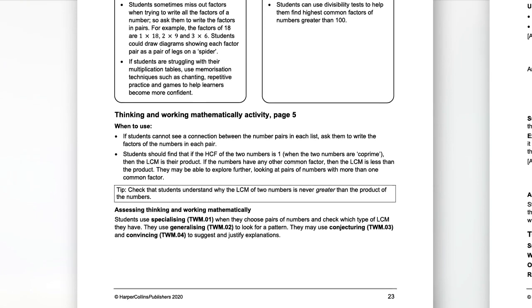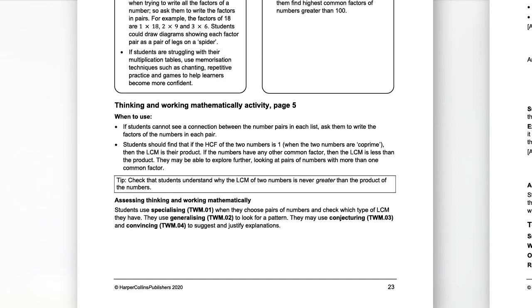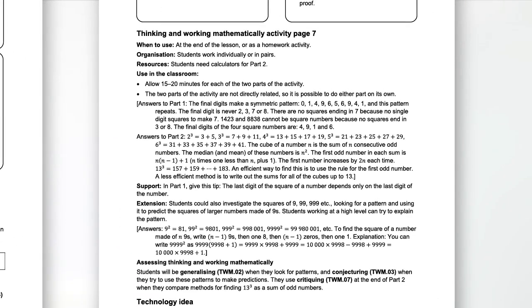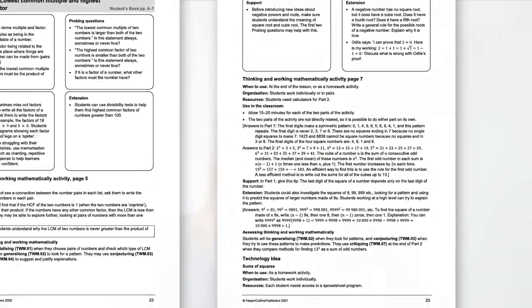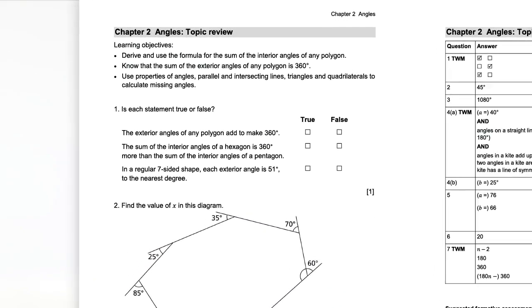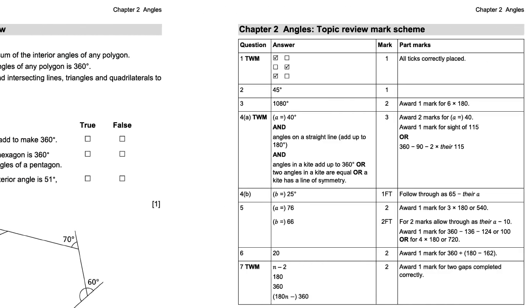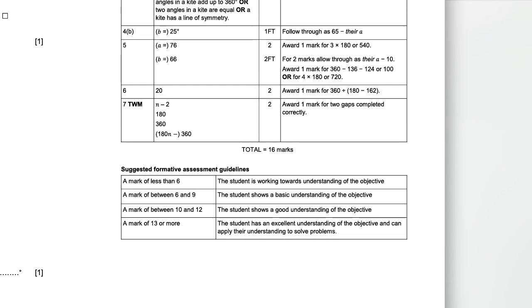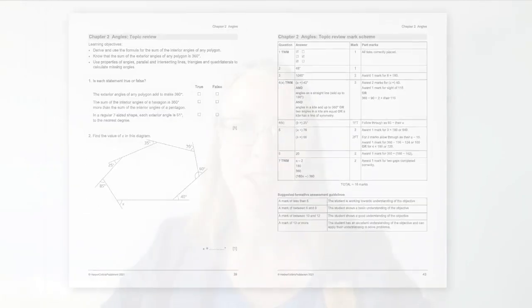Full and detailed support for all the thinking and working mathematically activities in the student's book is given here, including tips on classroom management, ideas for support and extension, and guidance on assessment. The teacher's guide also includes additional thinking and working mathematically activities that can be flexibly incorporated into lessons. This integrated approach means you can have complete confidence that our course fully addresses this important new curriculum framework element. Each chapter ends with clear signposting of assessment opportunities, including printed topic review tests — previously only available online — with detailed mark schemes in the familiar checkpoint test mark format, including guidance for formative assessment. The teacher's guide also includes a wealth of photocopiable resources to accompany activities in the student's book and teacher's guide, making it easy for you to deliver the course.